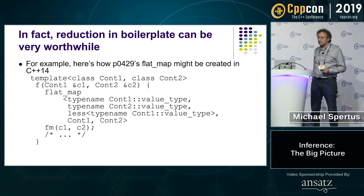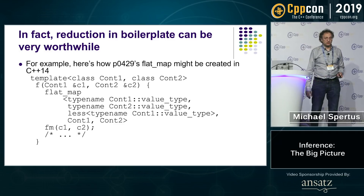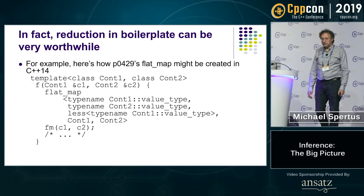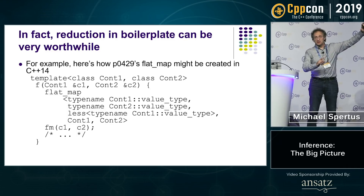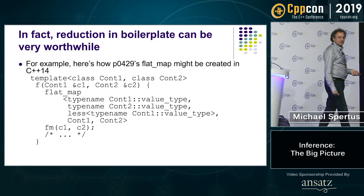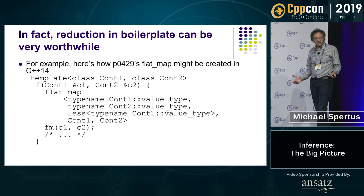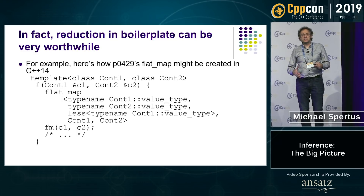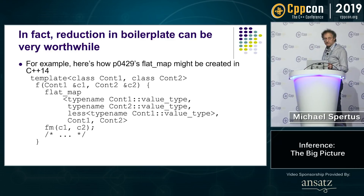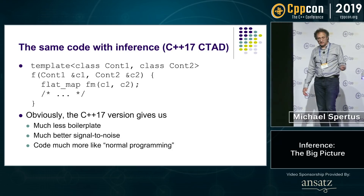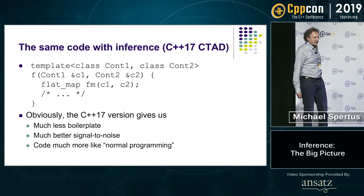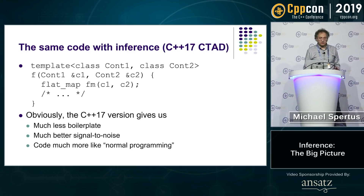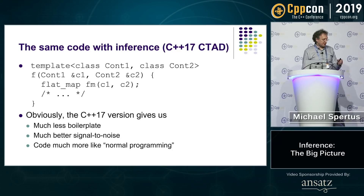Here's how P0429's flat_map might be created with a C++14 compliant compiler. I have a function that creates a flat_map as a local variable, and you have to very clearly specify many template arguments — completely ridiculous because the flat_map is gluing together two existing containers and these template arguments aren't even legal to be anything else. With a C++17 compiler, you can write the same code with much less boilerplate and much better signal-to-noise ratio.